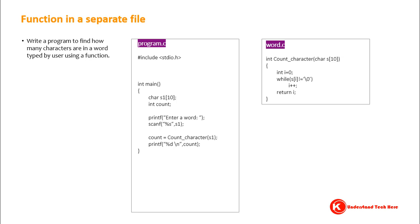Now, what happens when you call function countCharacter? First, the computer will look for the definition of the function in the file program1.c, but we have already removed this function from that file. Does the computer by itself know that we have moved the function countCharacter into the file what.c? Of course not. Hence, we should type this. When we call function countCharacter, now the computer will know and look for the definition of the function in the file what.c.